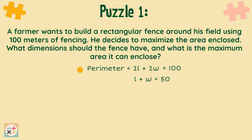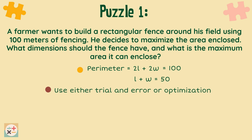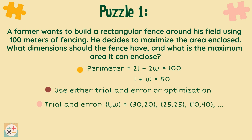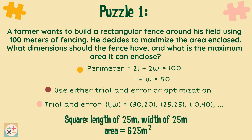So we know we need the length and width to add up to 50 meters. To solve this you can use either trial and error or optimization. Here we have used trial and error to test out different dimensions for the length and width, to discover that when using a length and width of 25 meters it will create an area of 625 square meters. This is the maximum area we can find.